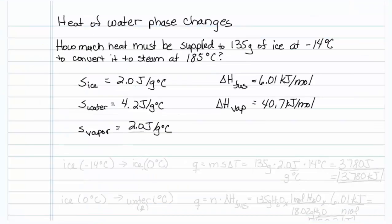This is how to get the heat of water when it undergoes phase changes. Our question is, how much heat must be supplied to 135 grams of ice at minus 14 degrees Celsius to convert it to steam at 185 degrees Celsius? And we're given lots of specific heats and also heats of fusion. This is going to take us five steps.